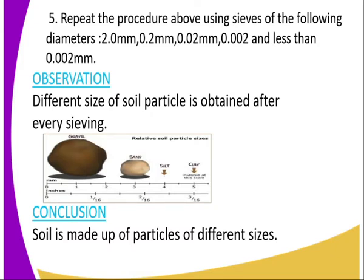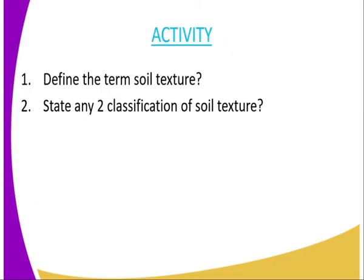The observation is that different sizes of soil particles are obtained after every sieving, as illustrated here. In the first sieving, gravel — the biggest soil particles — is left on the first sieve, and the particle size decreases as you continue sieving with different sieves. The conclusion is that soil is made up of particles of different sizes.